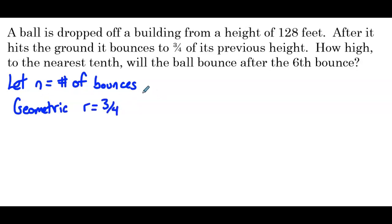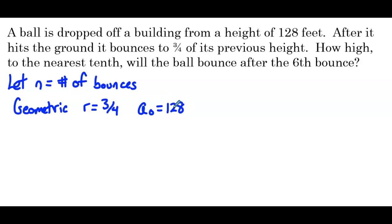N is the number of bounces. We drop the ball from 128 feet — it hasn't bounced yet, zero bounces. So in subscript notation, a sub zero equals 128. No bounces, we're at 128 feet. We can use these two pieces of information to write our explicit formula.